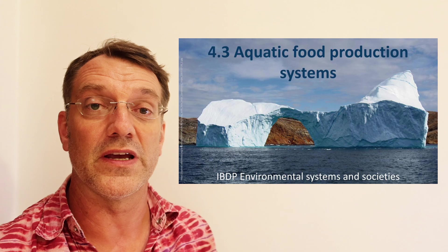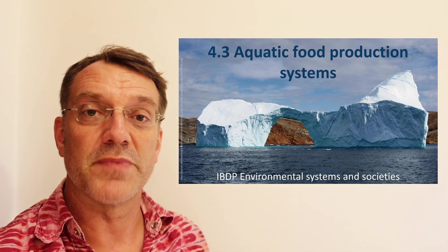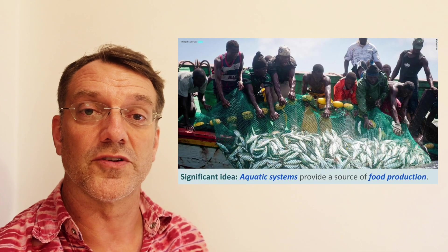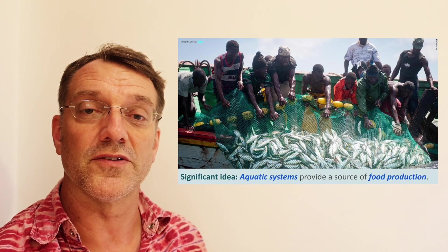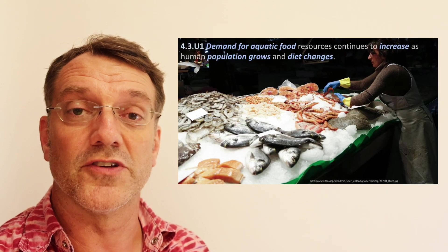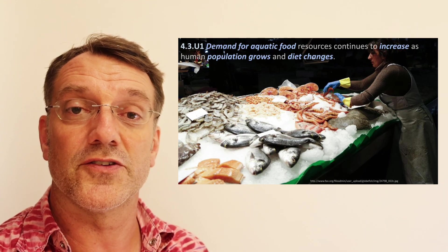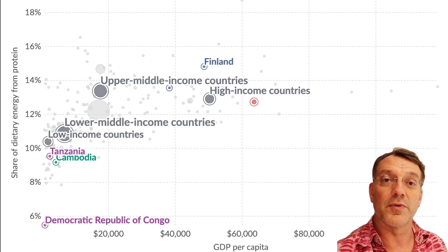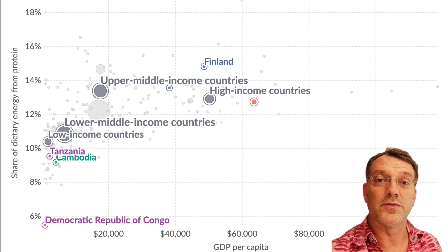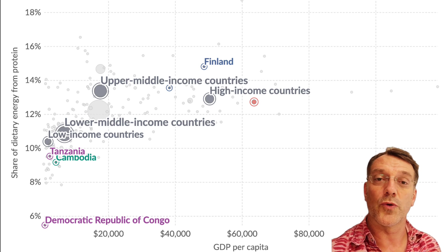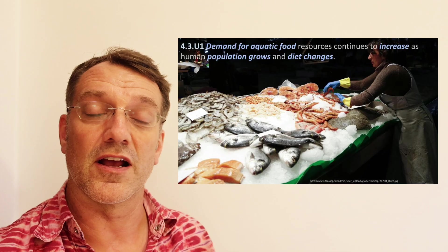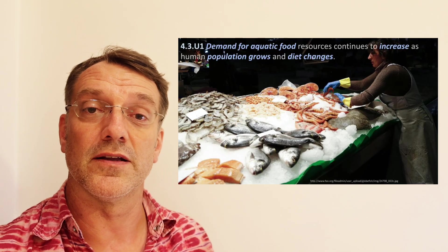Welcome to another video for IB Environmental Systems and Societies. Today's topic is 4.3 Aquatic Food Production Systems. The first big idea is that aquatic ecosystems are major sources of food for human populations. Demand for food from aquatic ecosystems will continue to increase as the human population grows and diets change. As people become wealthier, their diet shifts from a plant-based diet to a protein-rich diet, and aquatic ecosystems can provide a lot of that protein.